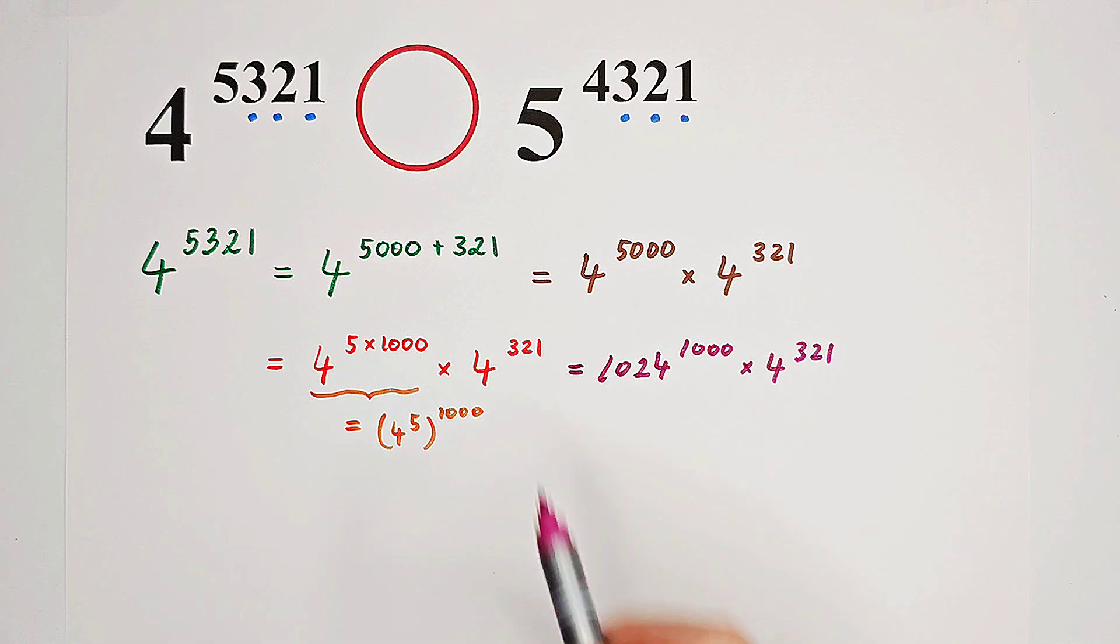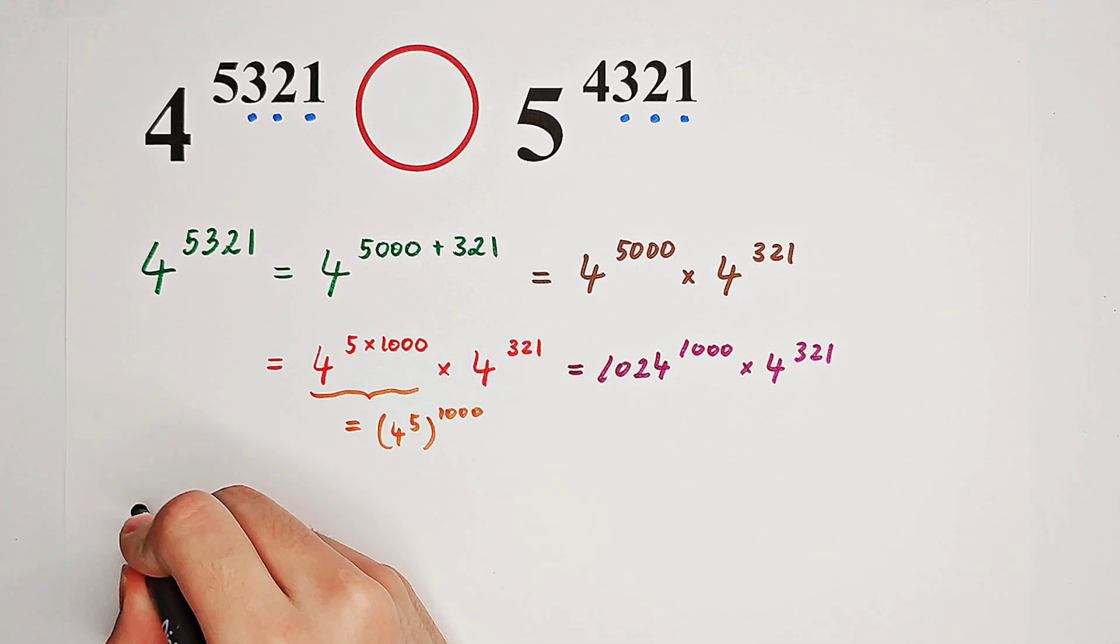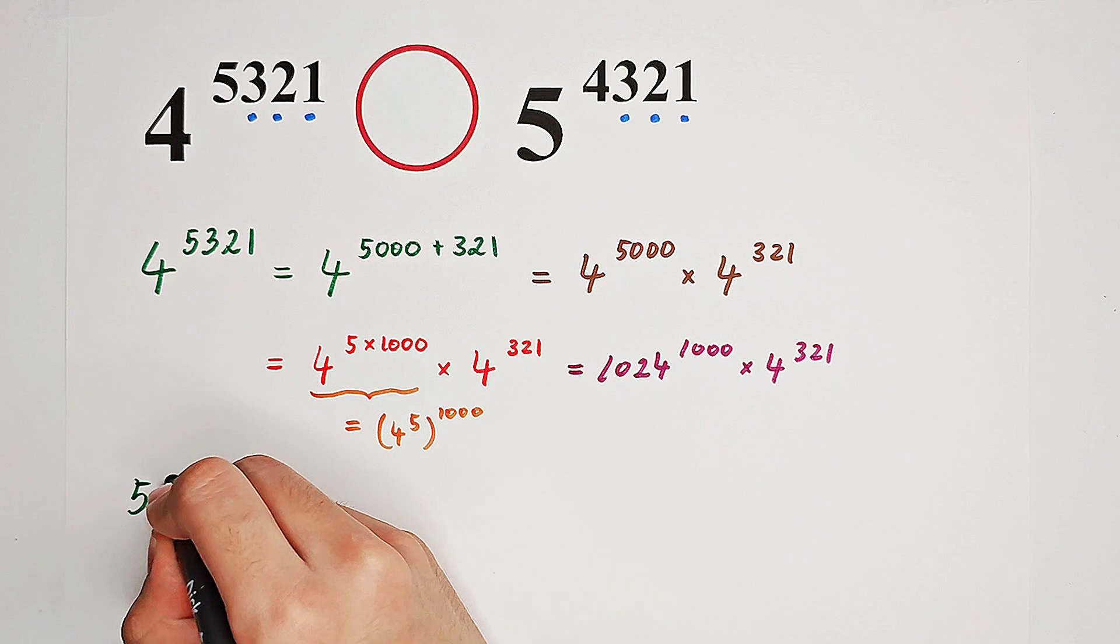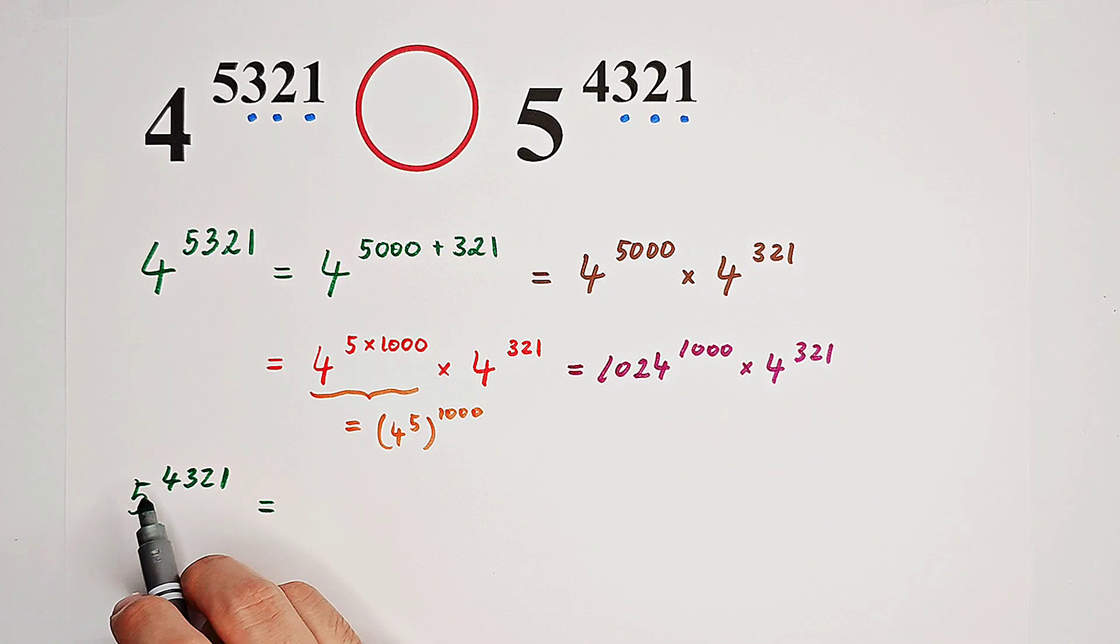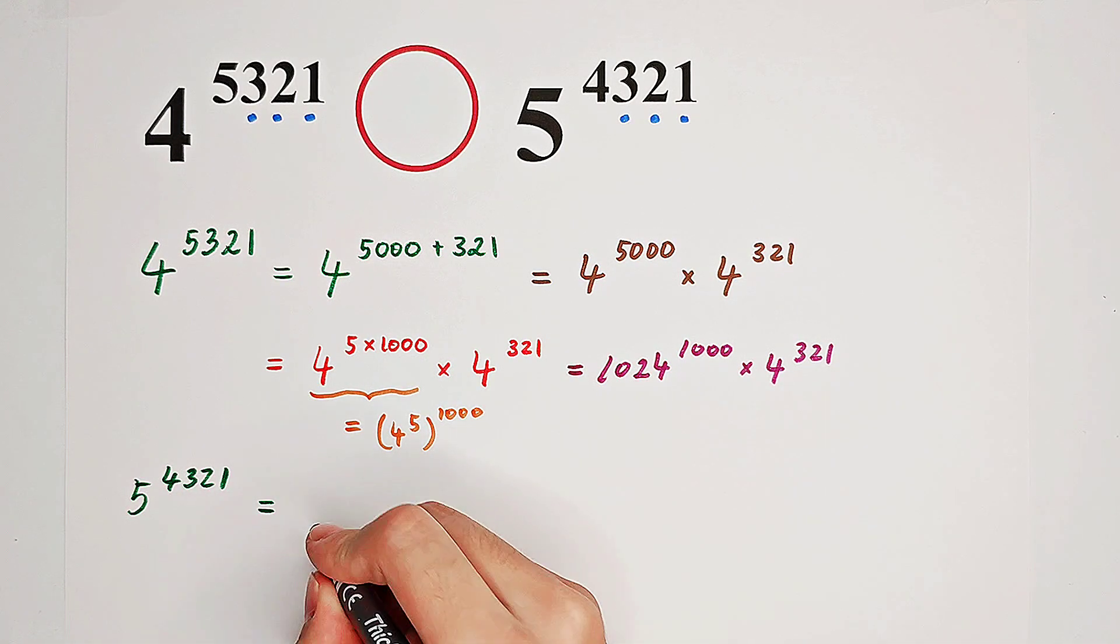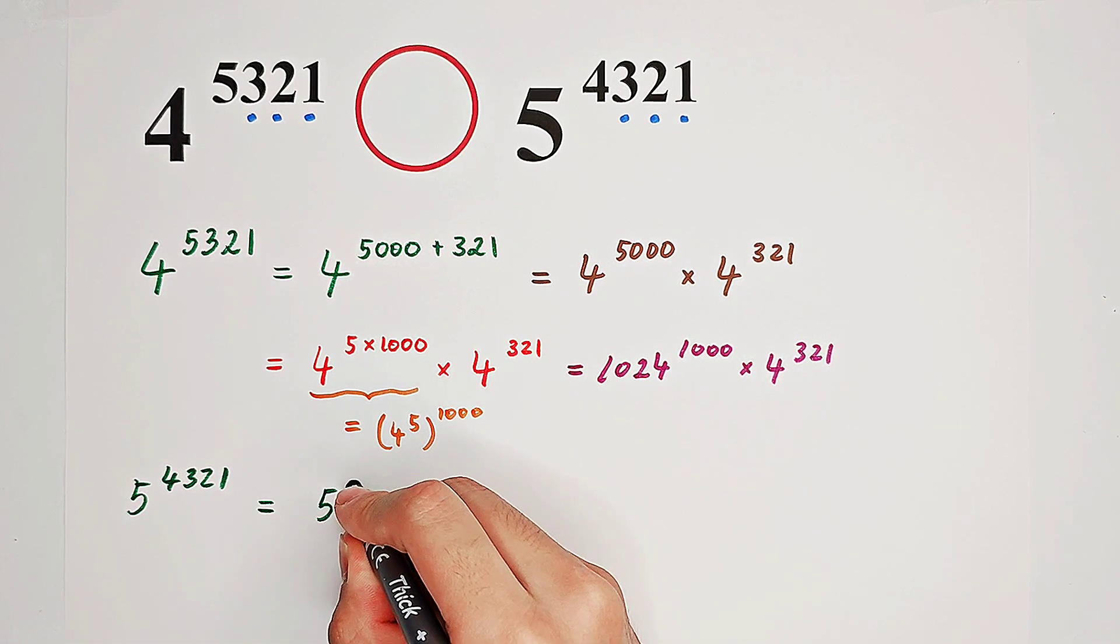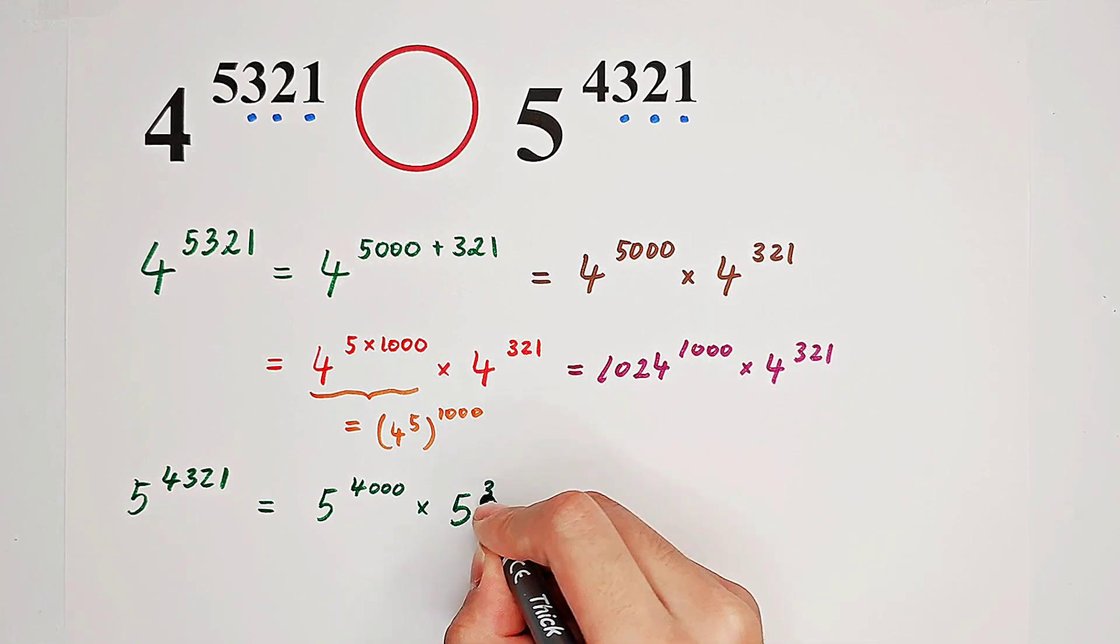Then, let's have a look at 5 to the power of 4,321. We can use the same method. It can written as 5 to the power of 4,000 plus 321, and it's going to be 5 to the power of 4,000 times 5 to the power of 321.